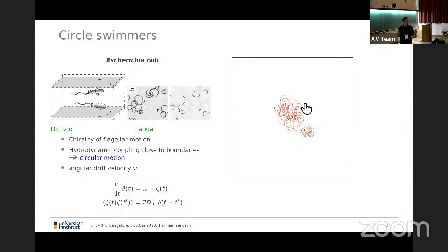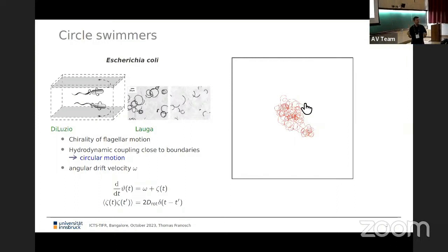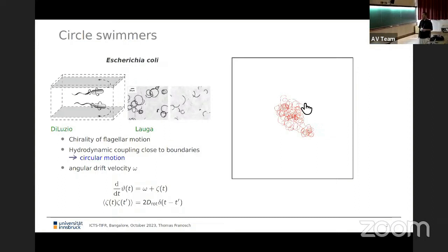Rather than going straight — I said the active Brownian particle is the drunk driver that goes straight with the wheel shaking — there's no reason why the normal position of the wheel should be straight; it could be tilted a little bit, so you go in circles and shake the wheel around this tilt. We expand our mathematical description for the angular motion: theta is the orientation of the particle, and I add one more parameter, omega, for the angular drift velocity.